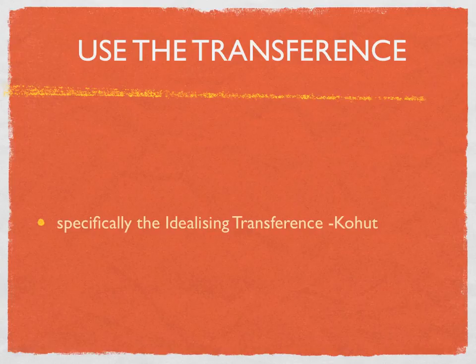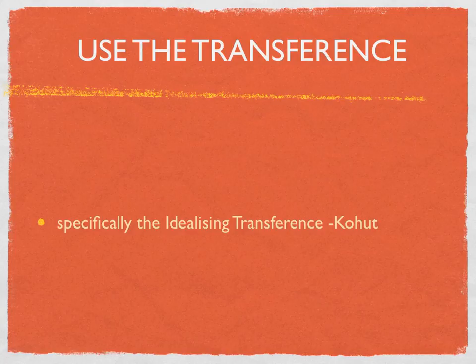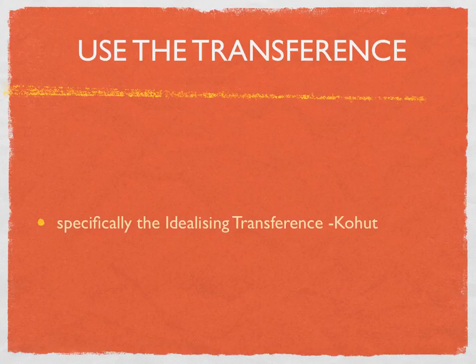We must also use the transference — especially the idealising transference. Kohut, who was a psychoanalyst and self-psychologist, talked about how we can use the desire of the client to be better, their desire that someone will be dependable, have a sense of continuity, and be able to help them through their distress. It's through this idealising transference — looking for the ideal person to help them feel safe and secure — that connection is made. Eventually, they need to move away from the idealising transference to tolerate negative transference, tolerate negation, and achieve homeostasis and central integration.